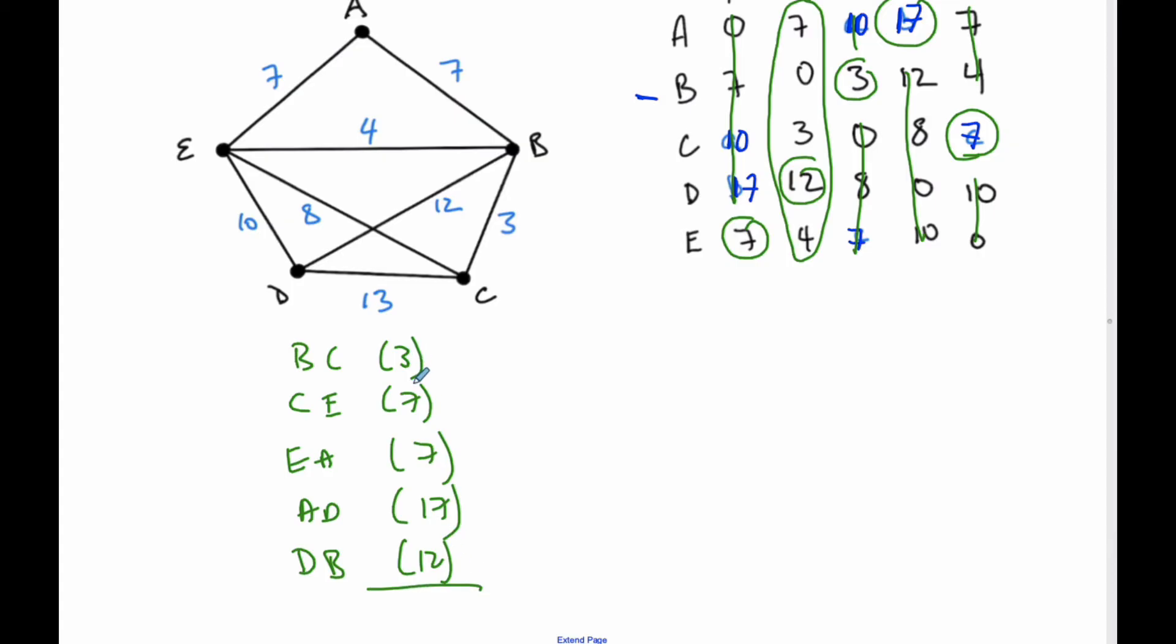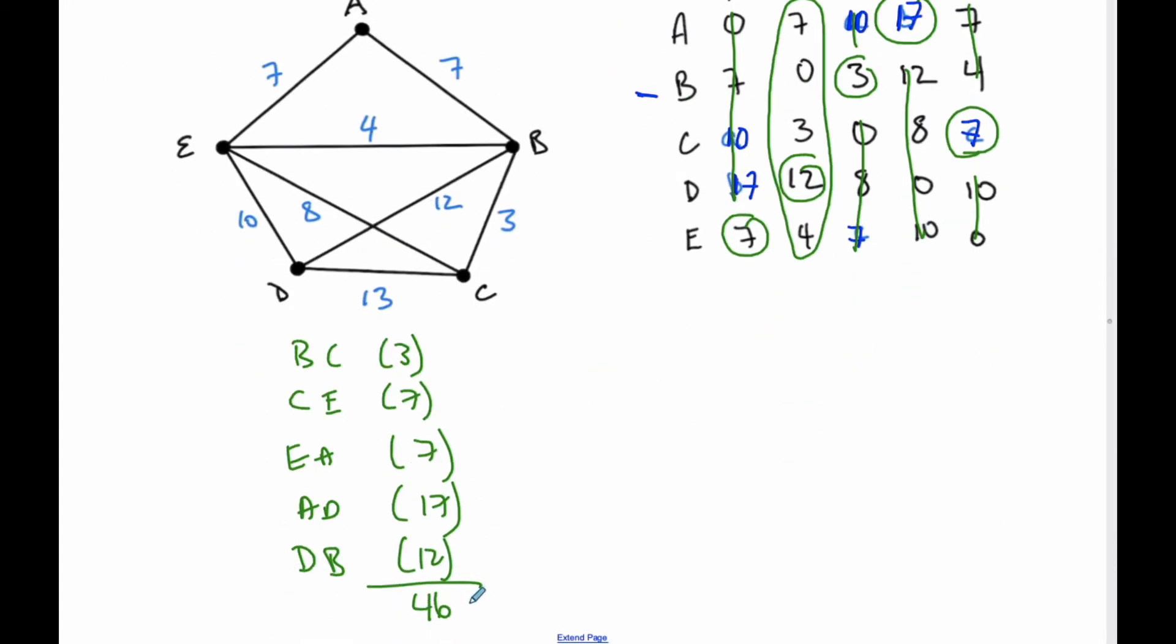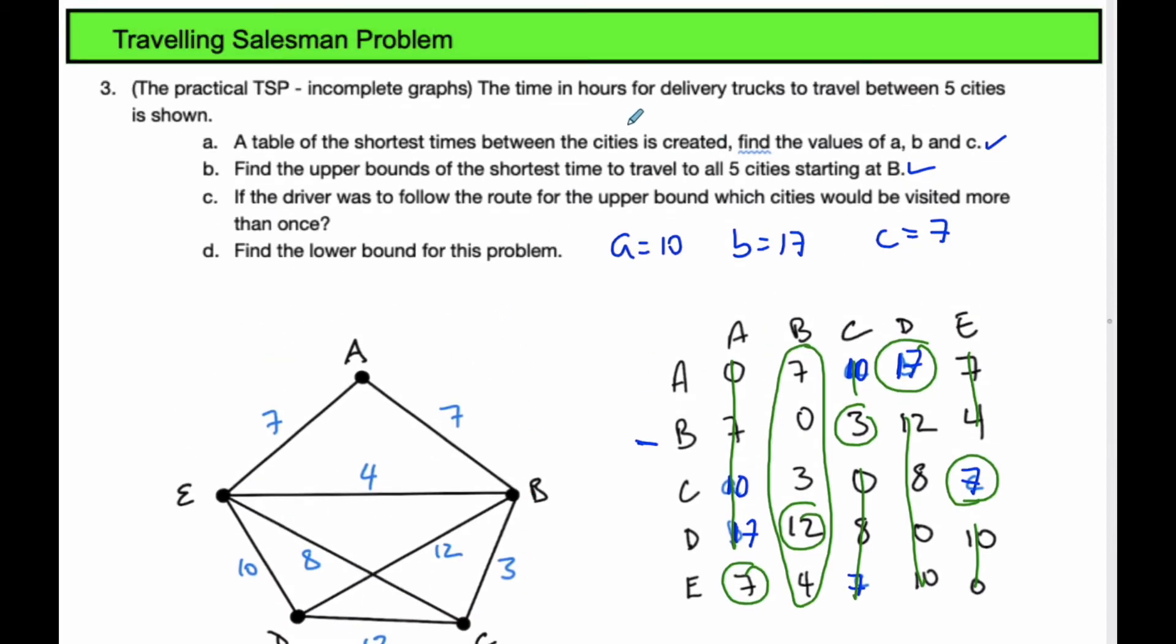If I add these all up, I get 10, 24, 34... I get 46, and the total is the minimum distance. So the upper bound for the shortest time starting at B is 46 hours.